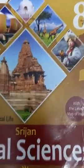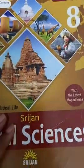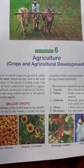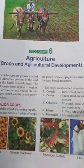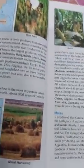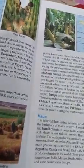Good morning dear students. In today's lecture we are going to continue the reading of Geography Chapter 6: Agriculture, Crop and Agricultural Development. In the previous lecture we read about the different classification of crops, and about rice and wheat — what type of climate and soil is required for them. In today's lecture we are going to read about maize.